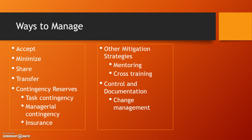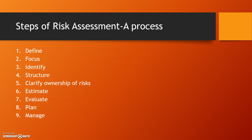We can accept a risk, minimize the risk, share the risk among other parties, transfer the risk, and we'll talk about contingency reserves. We can also mentor and cross-train — for example, if you only have one DBA who can work on this type of project, you can cross-train somebody else at a lesser level or have them mentor someone who could step in if necessary. And of course, we control and document risk through a process called change management, which we'll cover later in the course.